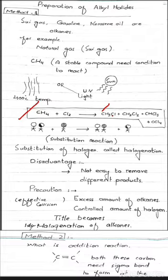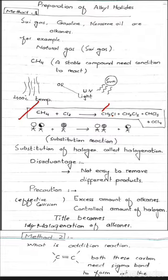Alkanes کی concentration زیادہ رکھیں تاکہ effective collisions ہوں اور required product زیادہ ملے۔ اس کے علاوہ halogens جیسے chlorine یا bromine کو کم رکھیں۔ اب اس method کا title: ہم نے alkanes کو use کیا — اس میں halogen کا substitution کروایا — تو نام بنا halogenation of alkanes۔